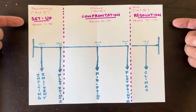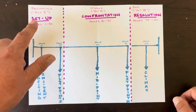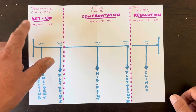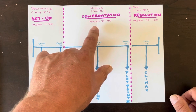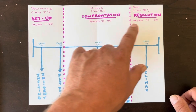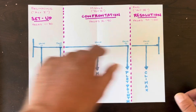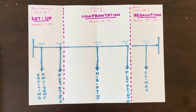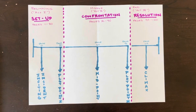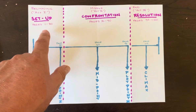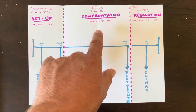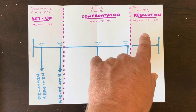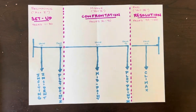However, he added a third set of terms. Field thinks of act one — the beginning of the screenplay — as the setup; act two — the middle of the screenplay — as the confrontation; and act three — the end of the screenplay — as the resolution. Field suggests that if your goal is to write an approximately 120-minute screenplay, you should devote about 30 pages to the setup, about 60 pages to the confrontation, and about 30 pages to the resolution. These numbers are based on the rough rule of thumb that one page of screenplay tends to translate to one minute of movie.